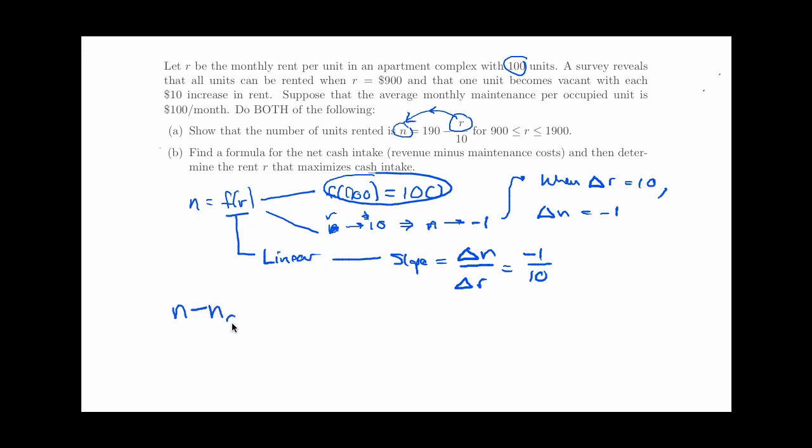The point slope form for the equation of a line would tell me that n minus a known n value equals the slope times R minus a known R value. Remember in this function, R is what we're plugging in, it's the independent variable, and n is what we're getting out. So if I just load in what I know now, I have n minus 100, that's my known n value, equals negative 1 tenth R minus my known rent value, which is 900. Now I just need to work this formula down until it looks like what the problem was asking for. n minus 100 is negative 1 tenth R plus 90, that's negative 1 tenth times 900, and then add the 100 to both sides, and I get n equals negative 1 tenth R plus 190, and that is the formula that was asked for up here in the problem statement.